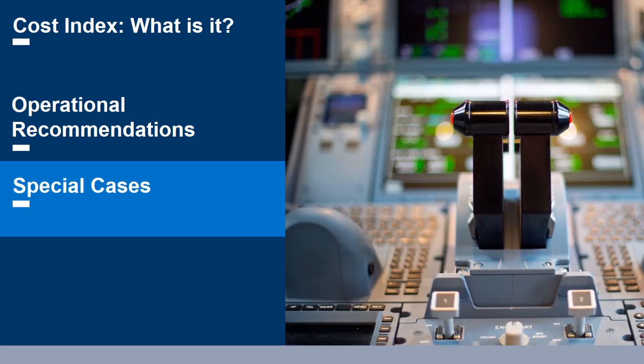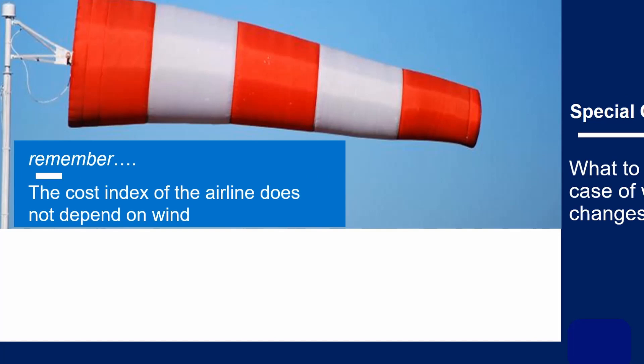I'd just like to touch upon a more complex issue. Are there any scenarios where changing the cruise speed is an option? The most common question relates to winds aloft — what happens if the en-route winds have changed since your flight plan was produced? Well, remember, Cost Index is simply a ratio between time costs and fuel price. Wind does not come into the equation, so does not change Cost Index.